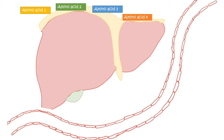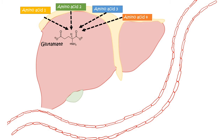The hub of amino acid catabolism is the liver. Each amino acid donates its amine group to a substance, ultimately generating glutamate. So the amine groups from different amino acids are funneled into glutamate.